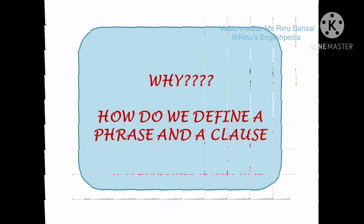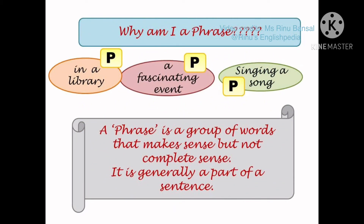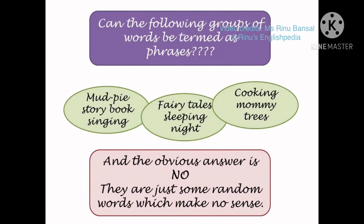A phrase is a group of words that makes sense but not complete sense. It is generally a part of a sentence. When we say a phrase makes sense but not complete sense, we mean that some part is understandable — we understand some part, although we do not know in what context it has been spoken.